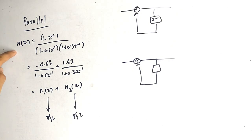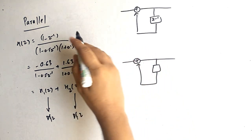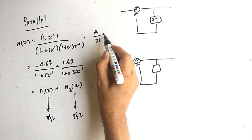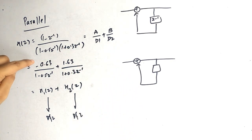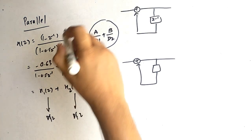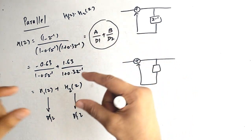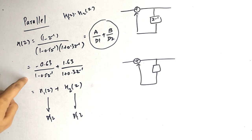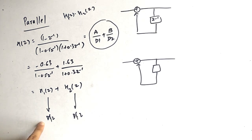Our next topic is parallel realization. The question uses the previous H of Z: (1 - z⁻¹) divided by the same denominator. We represent this in the form: A over denominator 1, plus B over denominator 2, where denominator 1 and denominator 2 are the two pole factors, and A and B are found using partial fraction logic. This extra step — solving the partial fraction — is what you have to do in parallel realization. In cascade it was simple: just separate the two factors, find the direct form 2 structure of both, and club them. In parallel you must solve the partial fractions to get the constants, then find the direct form 2 of H1 of Z and H2 of Z.